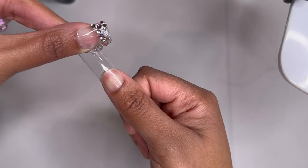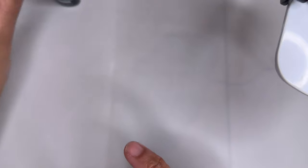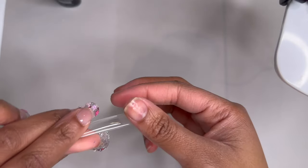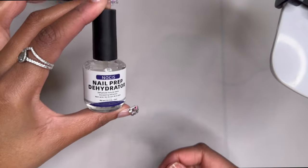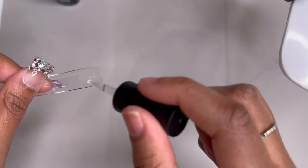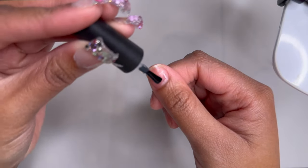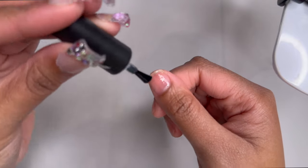Before adhering the nail a really good retention tip is to take your dehydrator and etch out the inside of the full cover tip before we apply it. This is going to help the full cover tip adhere really well to the base coat.